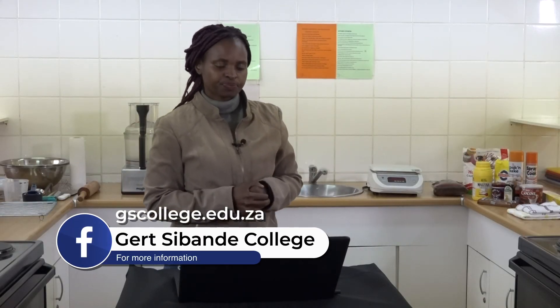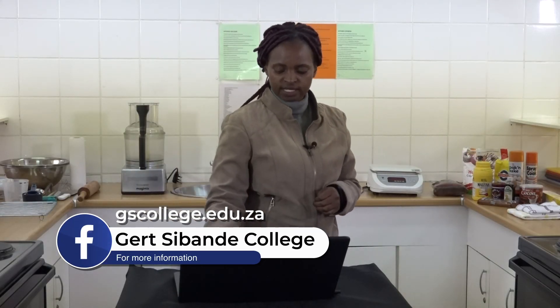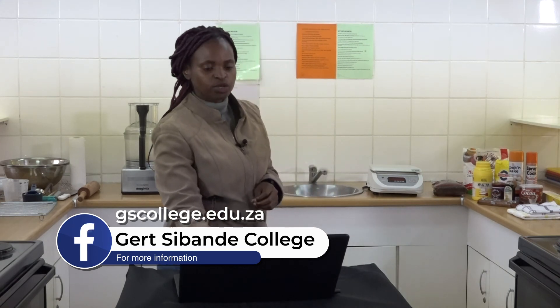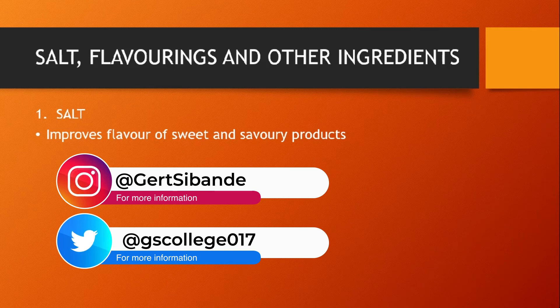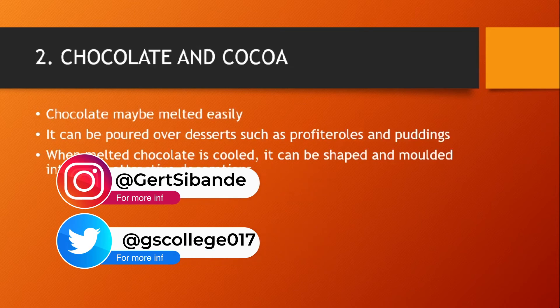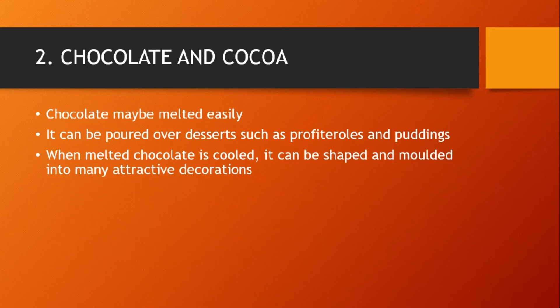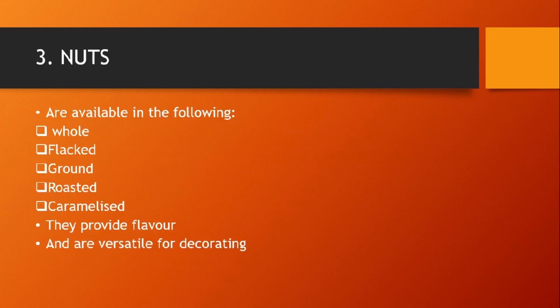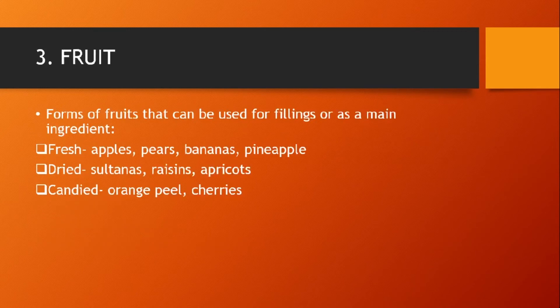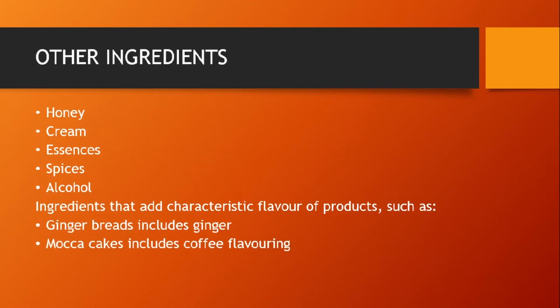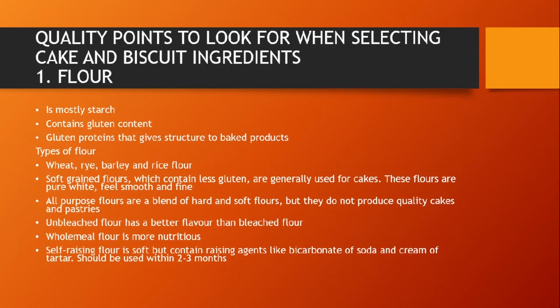Other ingredients used as flavourings include salt, which improves the flavour of sweet and savoury products; chocolate or cocoa; nuts; and fruit. Additional ingredients used during baking include honey, cream, essence, spices, and alcohol.